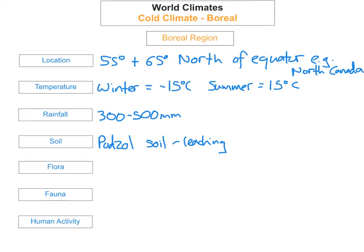The next thing we're going to look at is the flora. These regions have evergreen forests, and these evergreen forests — the trees — are called taiga trees. They're usually coniferous forests, so they have usually pine needles. The trees have adapted to life in the harsh, cold environment. Because they're needle shaped, it reduces the moisture loss.